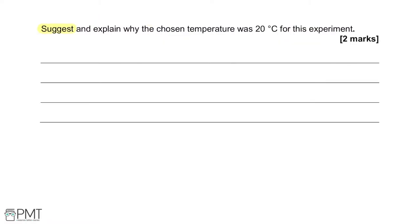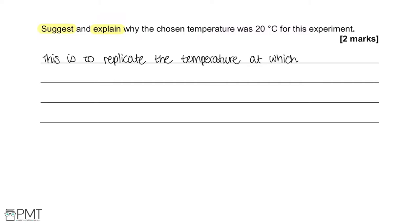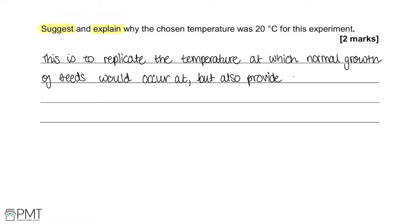Suggest and explain why the chosen temperature was 20 degrees for this experiment. The reason for choosing 20 degrees is to not only reenact the temperature at which normal growth of seeds would occur, but also to provide an optimal temperature at which respiratory enzymes can work.